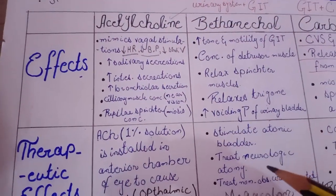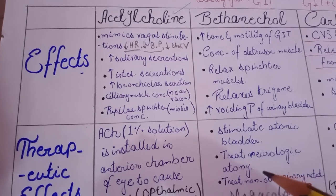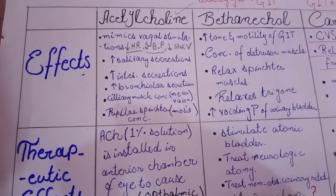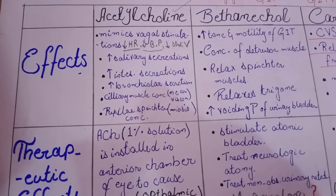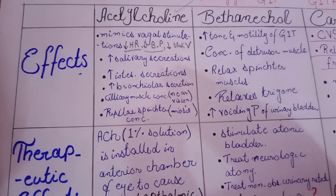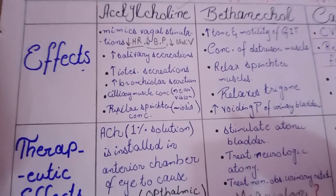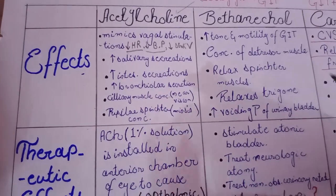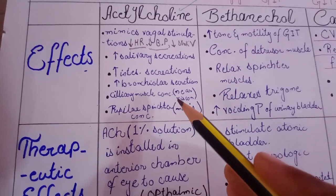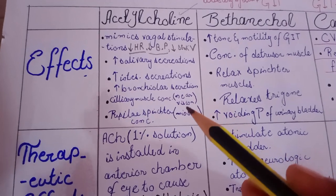Another effect of acetylcholine is on the ciliary muscles of the eye. The ciliary muscles are involved in shifting our vision from a distant point towards the near point — a process known as accommodation. So we can say that acetylcholine causes the contraction of ciliary muscles, helping us to accommodate our eye towards the near region.